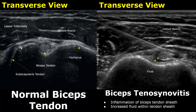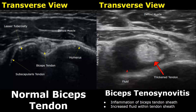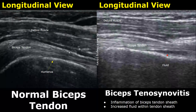Biceps tenosynovitis is inflammation of the biceps tendon sheath. In this condition, we will find increased fluid within the tendon sheath. Here is another image of tenosynovitis showing a large amount of fluid within the biceps tendon sheath. Here we see the normal biceps tendon in longitudinal view, and over here we see tenosynovitis in longitudinal view with some amount of fluid within the tendon sheath.